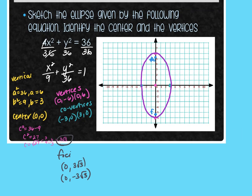Once you have the equation in standard form: identify the center, determine which denominator is larger — that's your a² — the smaller is b², and then figure out if it's vertical or horizontal. From there you can graph it and find all the required points.